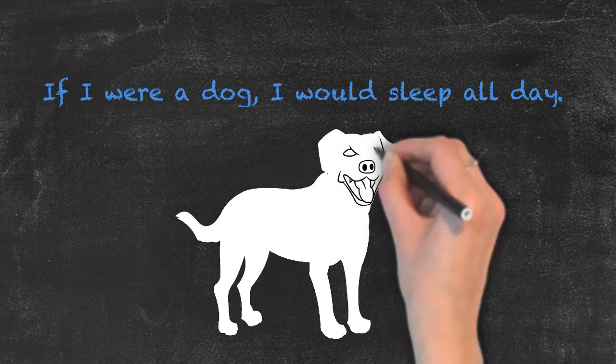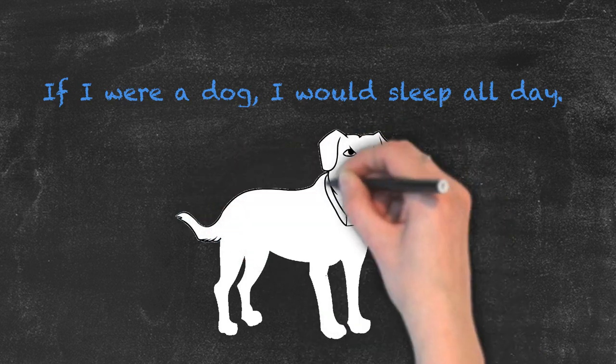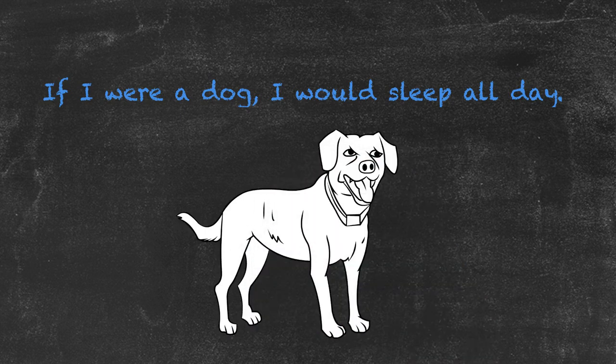There is no way we could actually become a dog, which is why we need to use were instead of was in this case. So remember,